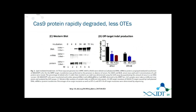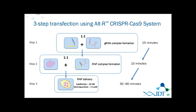A nice publication demonstrates this: when delivering Cas9 in plasmid DNA form, a western blot shows the protein is overexpressed over time, whereas delivering it in direct protein form results in a rapid on/off — it's degraded quickly. Because of that, you have a reduction in off-target effects, as has been shown in several publications.